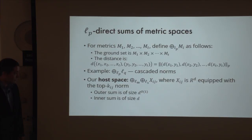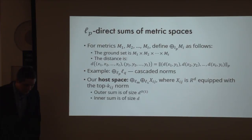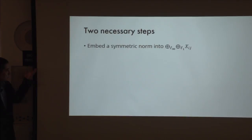The outer sum will be of polynomial size and the inner sum will be of linear size, so overall it's a poly-D dimensional space. We need to do two things: embed a symmetric norm into this product space, and then solve approximate nearest neighbor search for it. This is not entirely a new approach—it was executed before for Fréchet distance, edit distance, and Ulam distance.